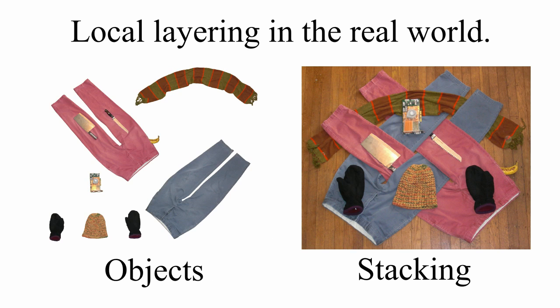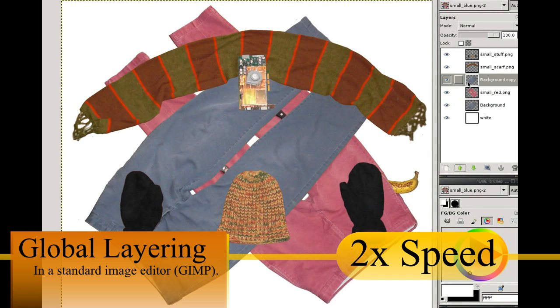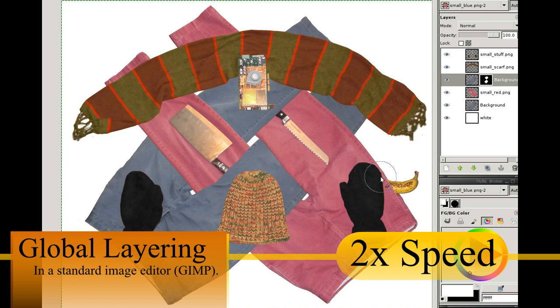In the real world, objects can be overlapped in intricate ways to create visual interest. To achieve this effect in a conventional paint program, users must duplicate layers and paint masks. This is because layers must appear in the same order in every region of overlap.